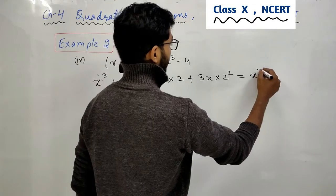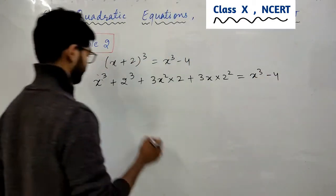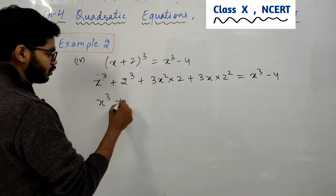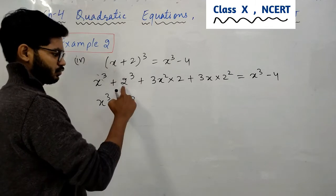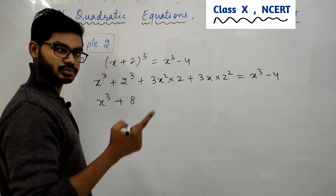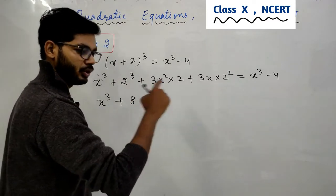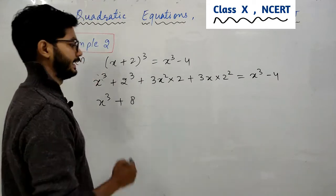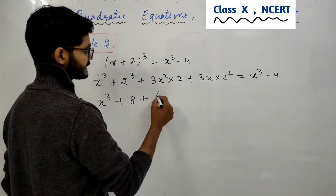ठीक है into multiplication में equals to x³ - 4. तो ये तो आगया x का cube. 2 का cube क्या होता है 8. कुछ बच्चे 2,3,6 लिख देते हैं. 2,3,6 नहीं है. 2 into 2 into 2 मतलब 2,2 is a 4, 2 is a 8.